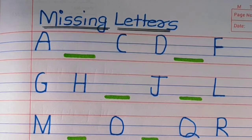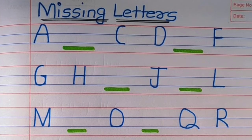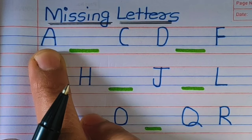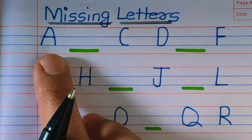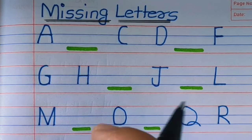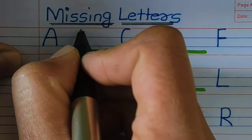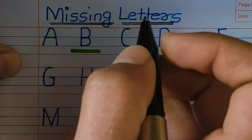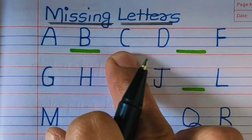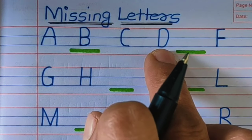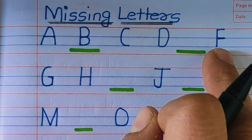Hello friends, welcome to our channel Adhivika Tuition. Today we are going to learn to find the missing capital alphabets. Let us start. Which alphabet is this? Yes, A. What comes after A and before C? Yes, children — B! Capital B. A, B, C.